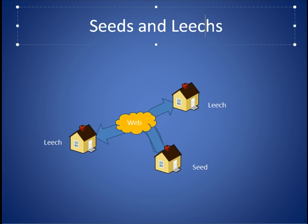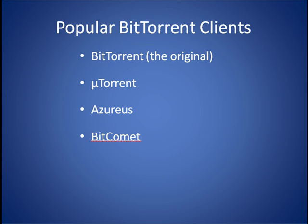BitTorrent users consist of seeds and leeches. Seeds are those users who have an entire copy of the file available for others to download, and leeches are those users that are either downloading the file or providing pieces of it to other leeches. BitTorrent client software is free and readily available on the Internet. In addition to the original BitTorrent, other popular BitTorrent clients have become available and are shown here.